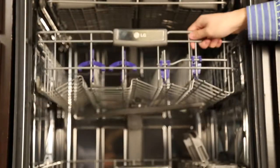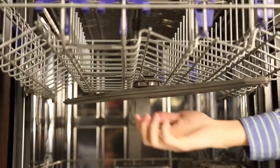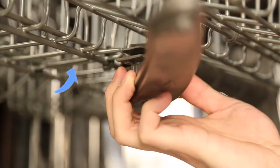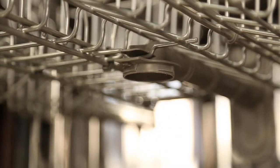To remove the upper spray arm, pull the upper rack forward, turn the nut located above the spray arm under the rack counterclockwise, and pull down. The spray arm will detach.